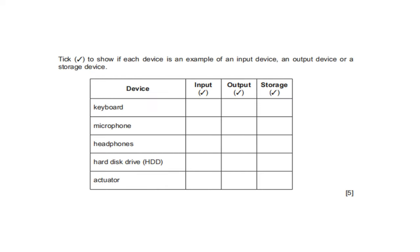Tick to show if each device is an input, output, or storage device. Keyboard — input device. Microphone — input device. Headphone — output device. Hard disk — storage device. Actuator — output device.